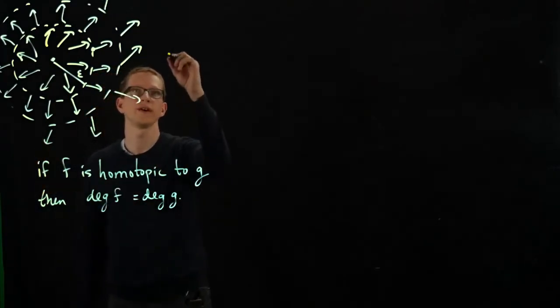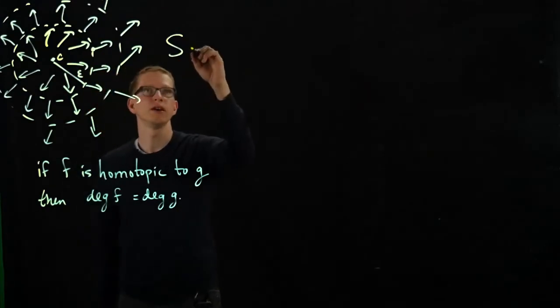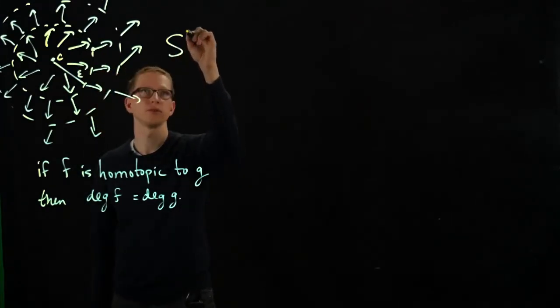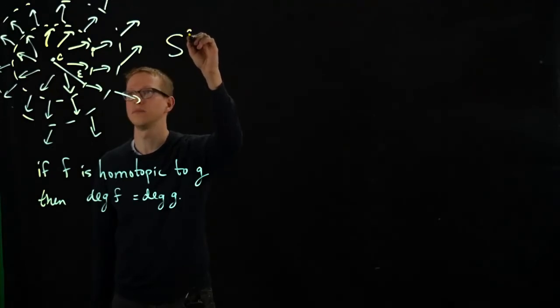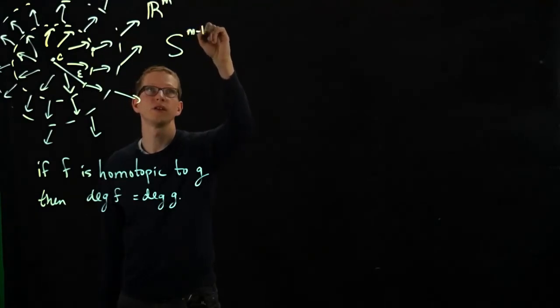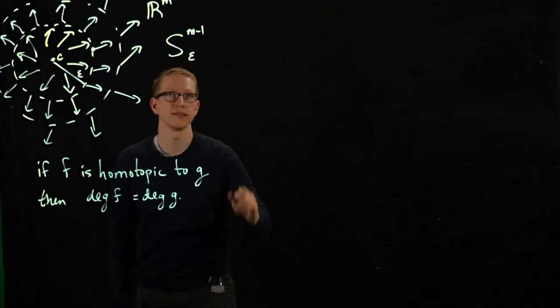So in this scenario, we have two spheres. One, and let's call this point C. And in fact, we can write this so we have a sphere of radius, let's say this situation is occurring in R^m. Then this is a sphere of radius epsilon. Let's denote it like this.